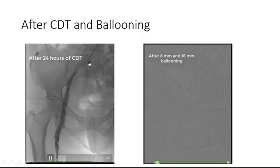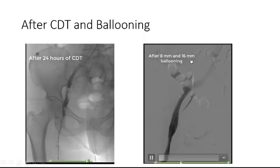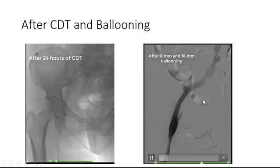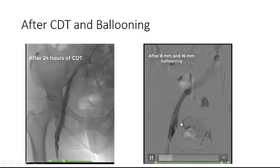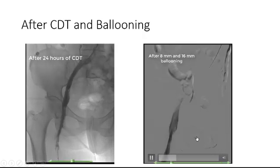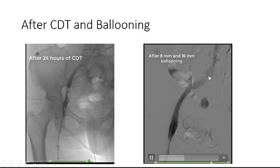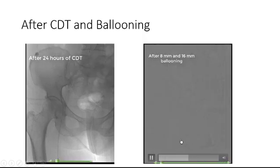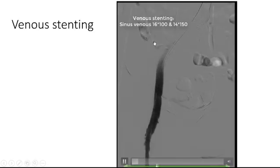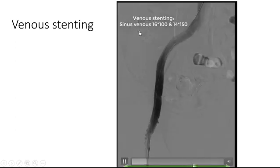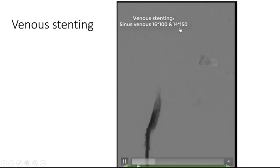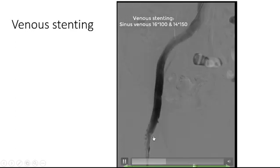Ballooning with 8 mm and 16 mm high-pressure balloons was performed, especially at the ostial portion of the left common iliofemoral vein. Venous stenting with Sinus Venous stents — 16 mm and 14 mm stents — was then completed.